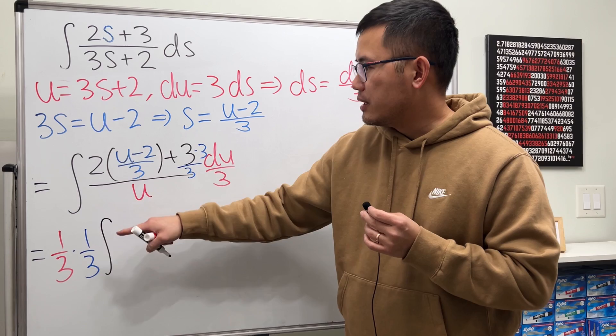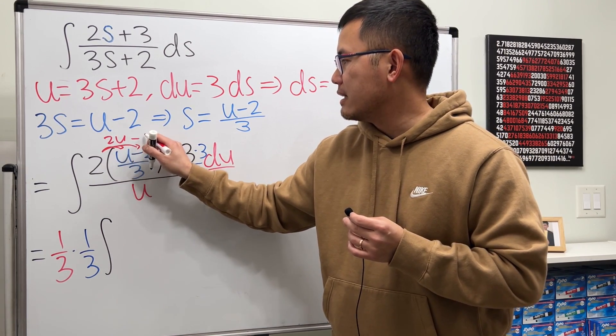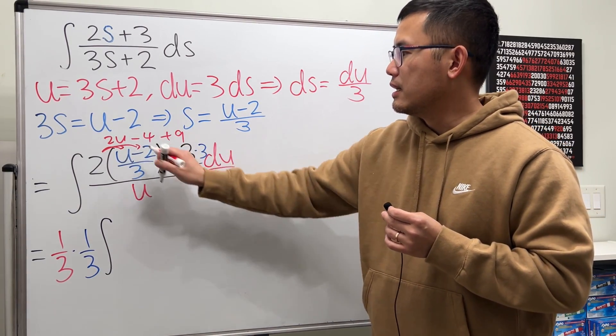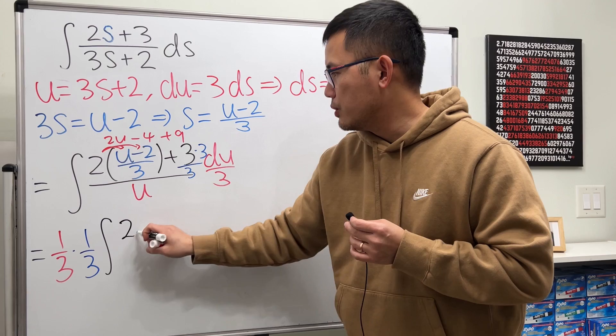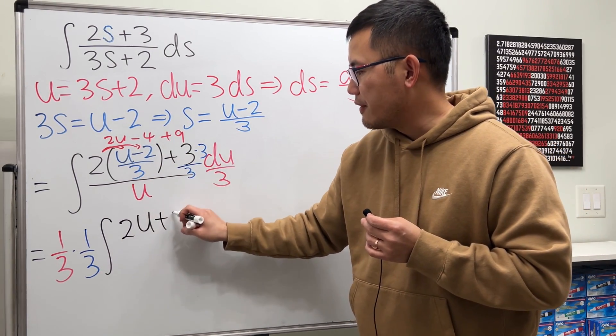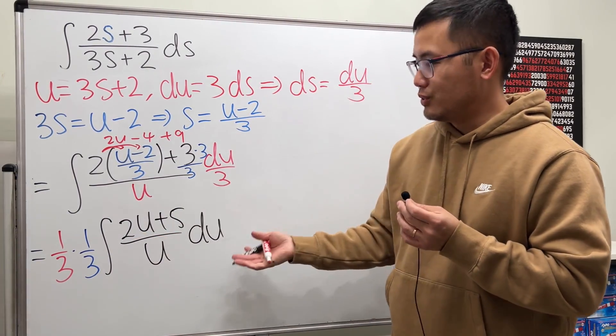And then we have the integral. This is out already. Let's just distribute this. We will get 2u and then minus 4. And then 3 times 3, that's just going to be plus 9. So the numerator is 2u minus 4 plus 9 is plus 5 over u in the u world. Just like that.